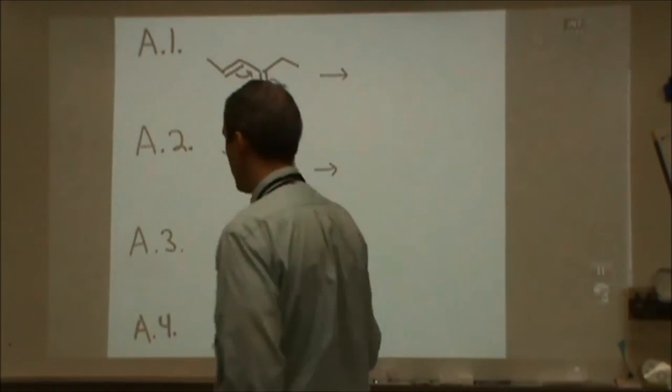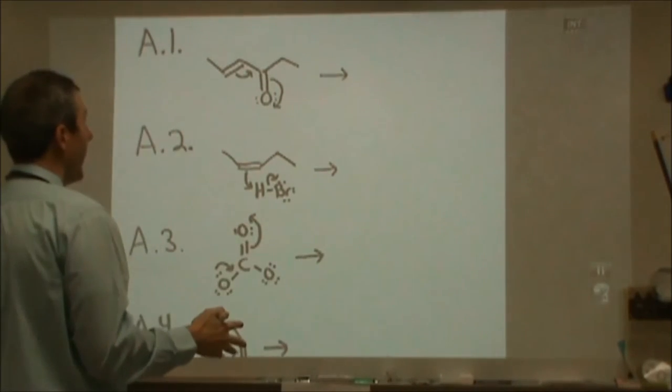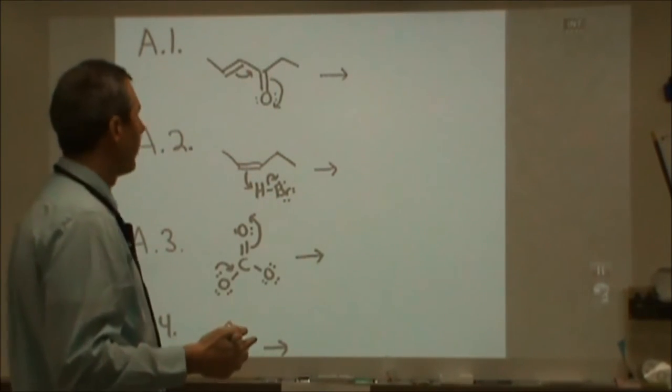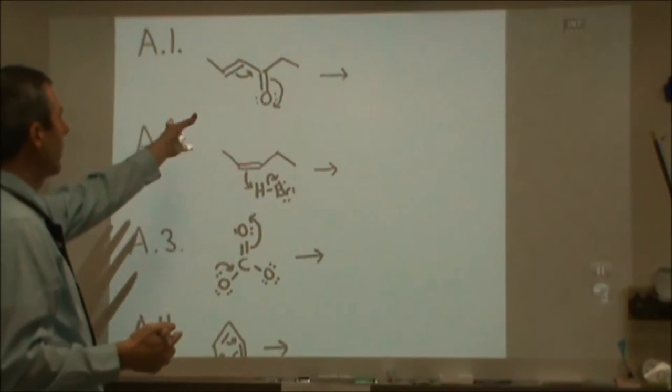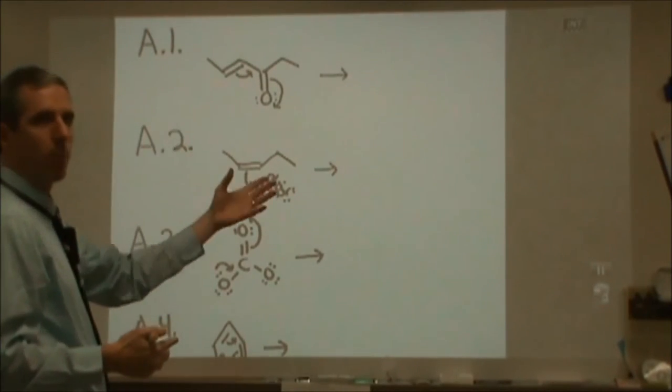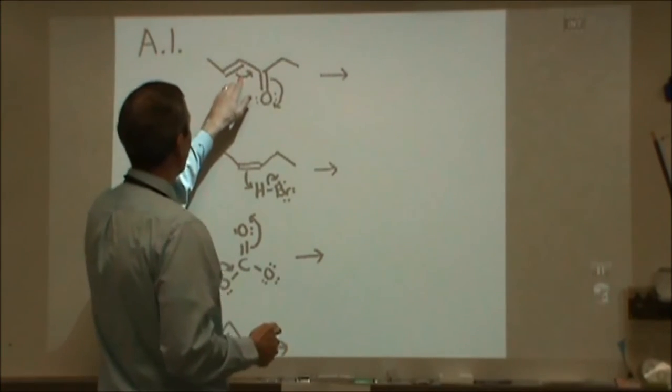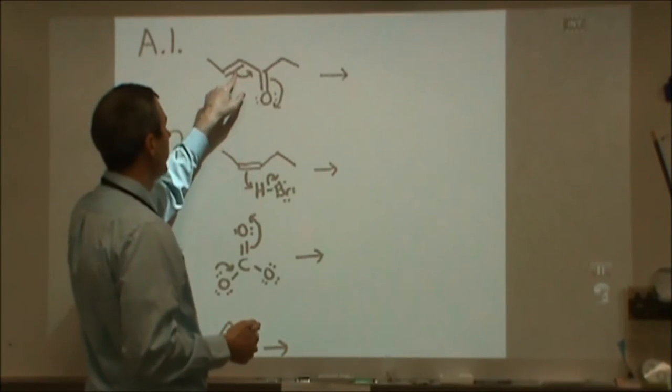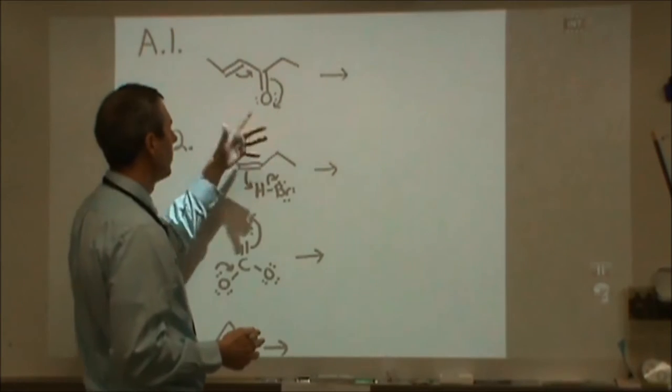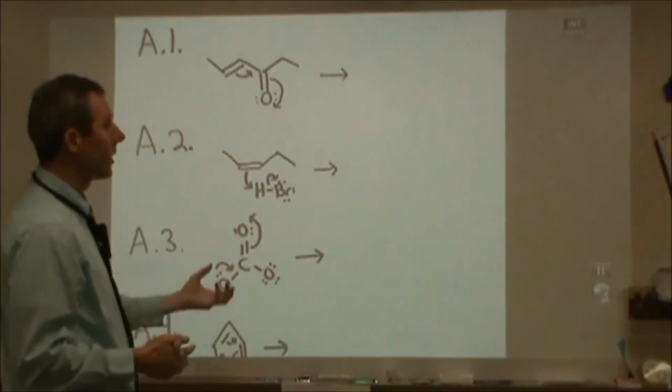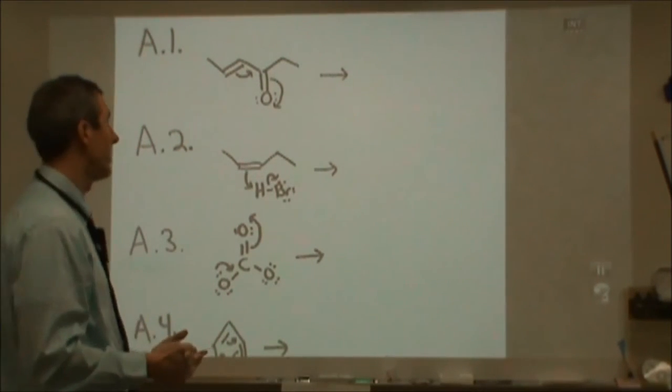The first thing is a whole bunch of problems labeled with A's. The A's are you need to be able to figure out when you have curly arrows shown what the product will be. A curly arrow represents the motion of two electrons, either in a bond or a lone pair of electrons, and those are moving to either form a new bond or to a different location.